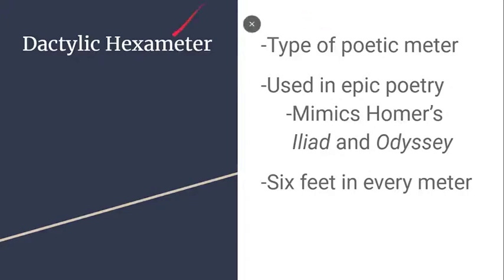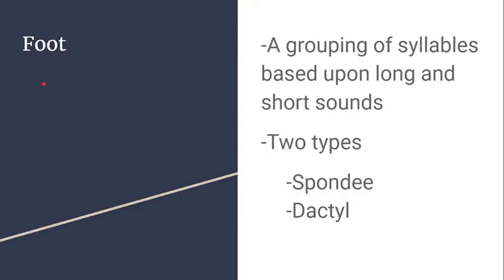The 'hexameter' means there are six feet in every line. A poetic foot is a grouping of syllables based upon long and short sounds. It's not the easiest thing to process in a vacuum, but examples are coming up shortly so the definition will make a bit more sense.